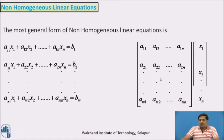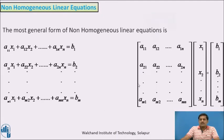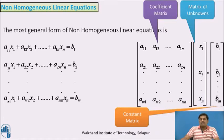We create one column matrix of the unknowns: x1, x2, and so on up to xn. We then equate this product of matrices to one column matrix, which is the matrix of constants on the right-hand side: b1, b2, and so on up to bm. This first matrix is called the coefficient matrix, the second is called the matrix of unknowns, and the last one is called the constant matrix.